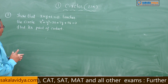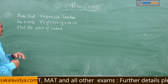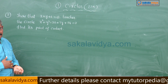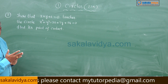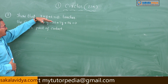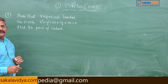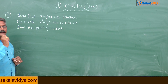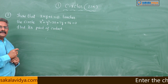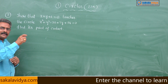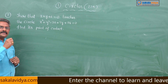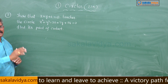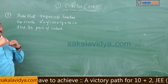This is the one part of the problem. The other part is at which point it touches the circle — that is called the point of contact, we have to find out. In order to show that the line touches the circle, the condition for tangency has to be tested. The perpendicular distance drawn from the center to the line must be equal to the radius of the circle — that is, r is equal to d.